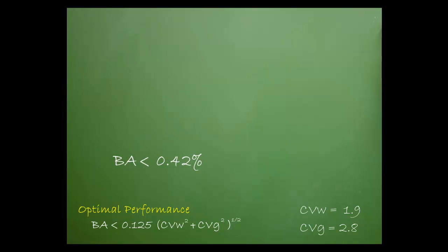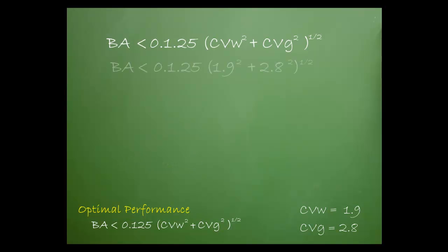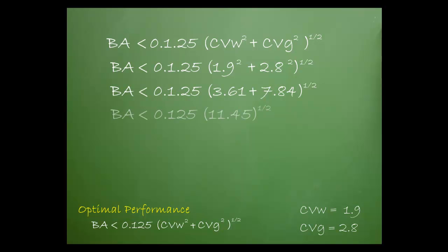The SEA is 0.42%. Here's how I got that figure. First, I substituted the values into the formula. Then I squared the values. I added together the values in the parentheses, then calculated the square root for the values in the parentheses. Finally, I multiplied the two remaining values.